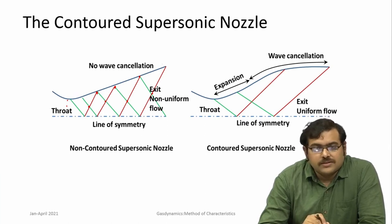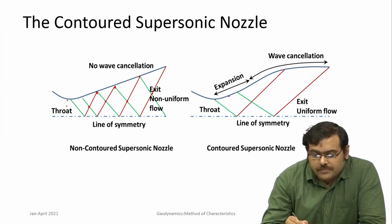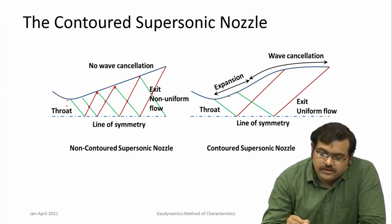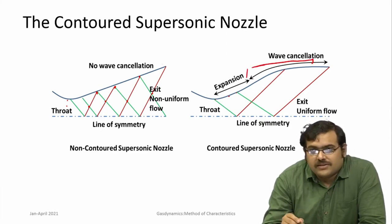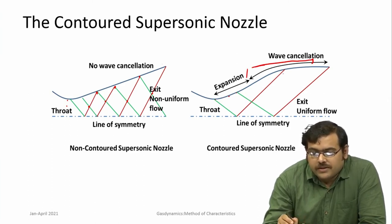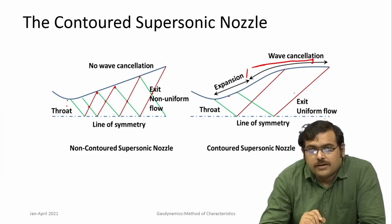Based on the principles of characteristics and wave cancellation, we can design nozzles that always produce uniform flow at the exit. At the throat there is a smooth expansion, giving an expansion section where the flow is smoothly expanded — Mach waves are produced. These waves then impinge on the walls. In such contoured supersonic nozzles, there is a section after the expansion section known as the wave cancellation section. There the wall is contoured so that the angle of the flow and the angle of the wall match, and the waves do not reflect.